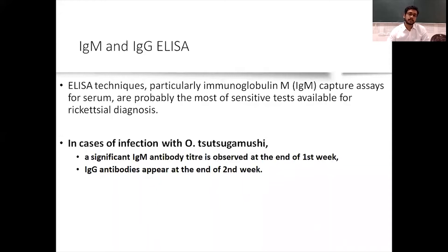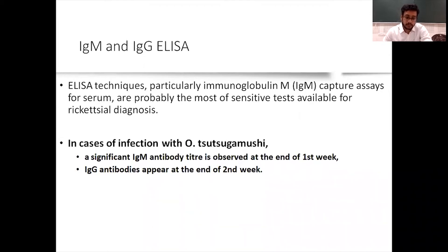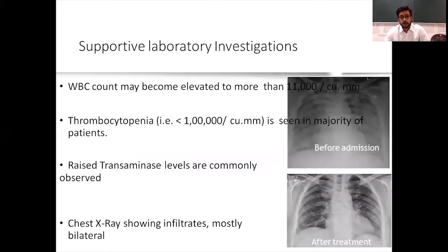IgM and IgG ELISA: IgM capture assays from serum are probably the most widely available for retrospective diagnosis. A significant IgM titer is observed at the end of the first week, so investigations should always be ordered after one week of fever. IgG antibodies appear at the end of the second week.